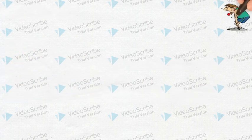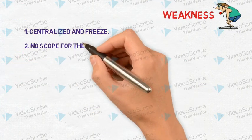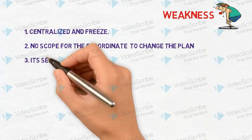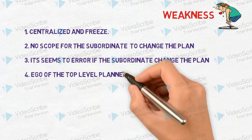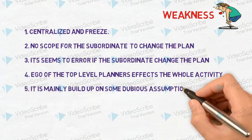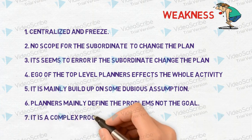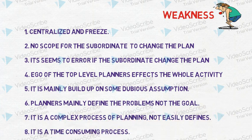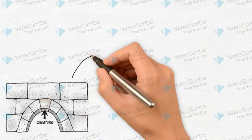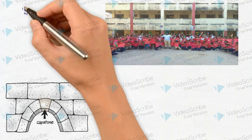Now the weaknesses: it is a very centralized process with no scope for subordinates to change the plan. It can lead to errors if subordinates attempt to change the plan without top-level planners' approval. It is also a complex process and finally a very time-consuming process.